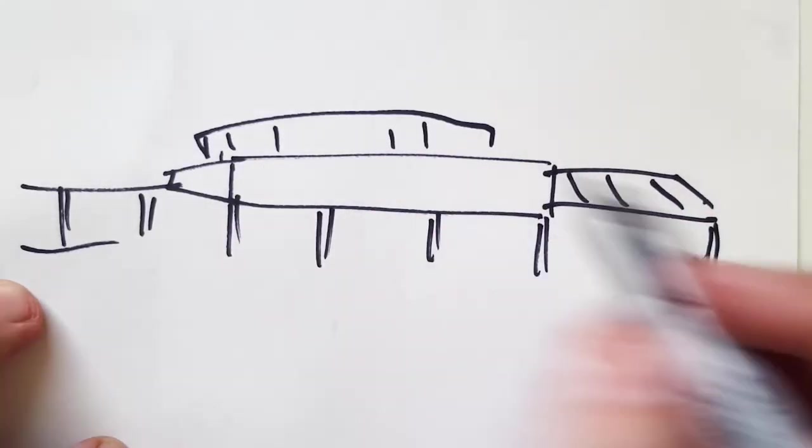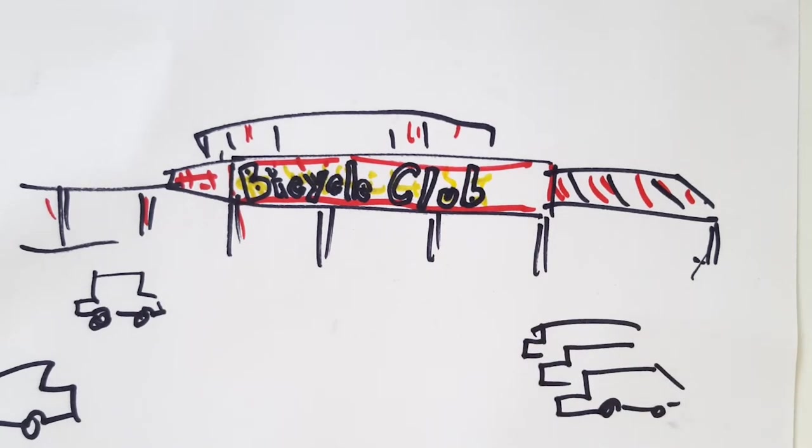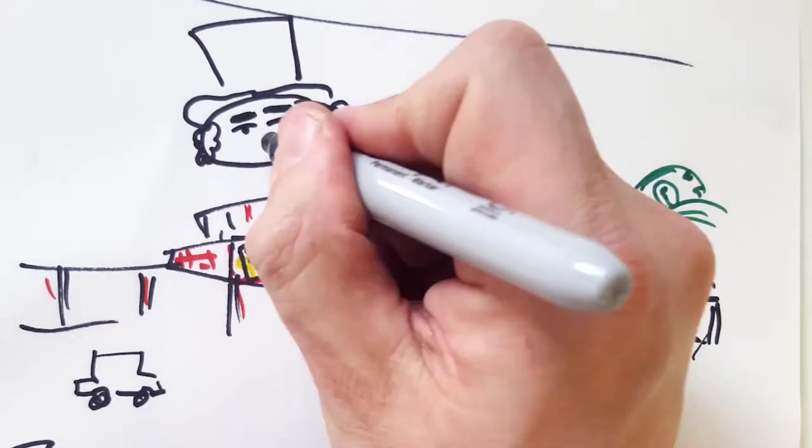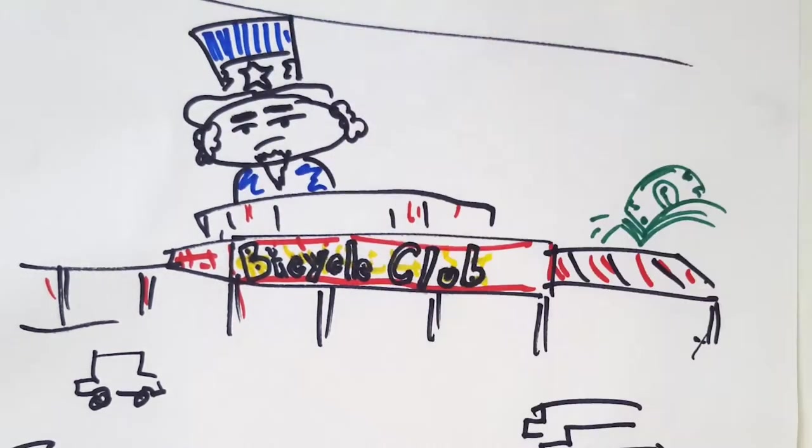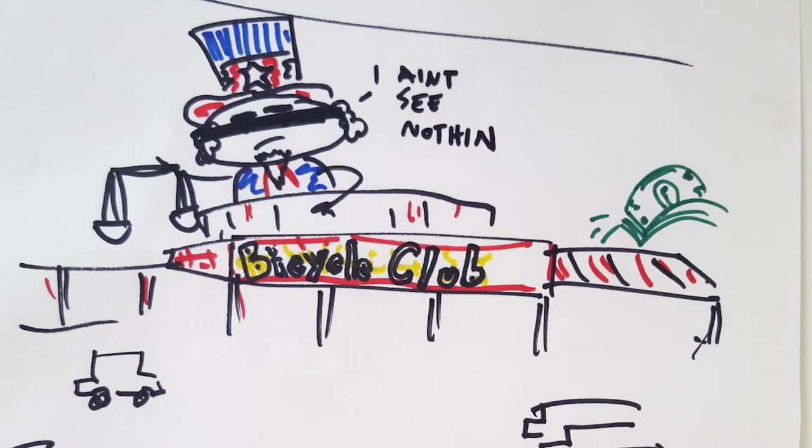But in the 1980s you see the Bicycle Casino gets built up. One of the only casinos in Los Angeles County. And rumors immediately begin that it was funded by marijuana. At some point the Bicycle Casino comes under so much scrutiny that the federal government comes in and actually seizes the assets and takes part in running the casino for a period of time.